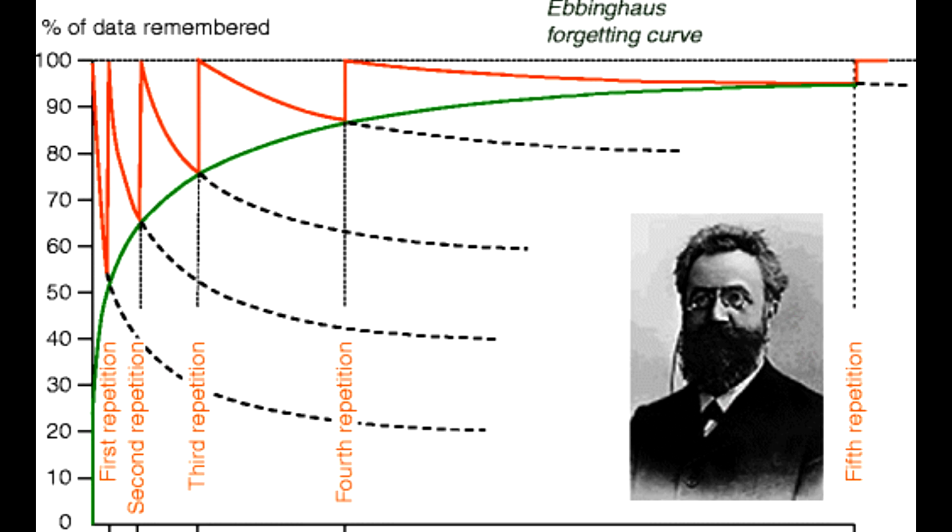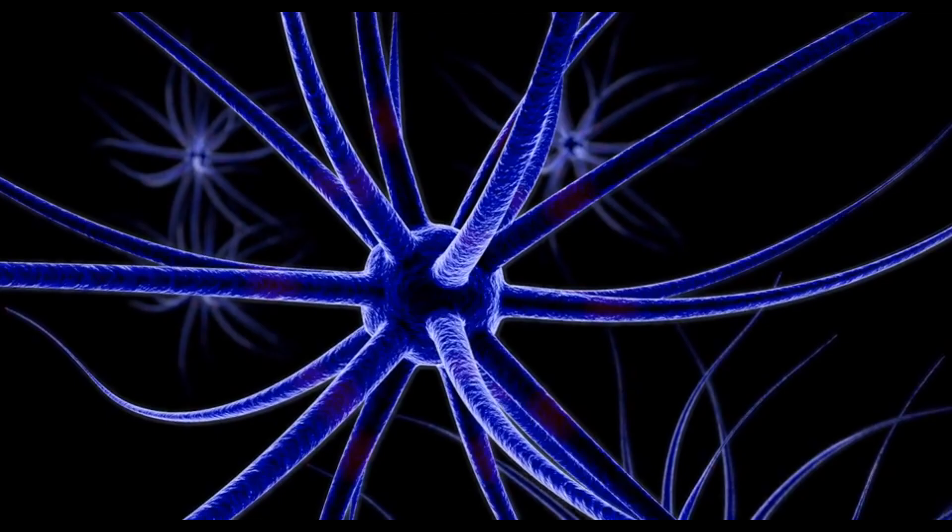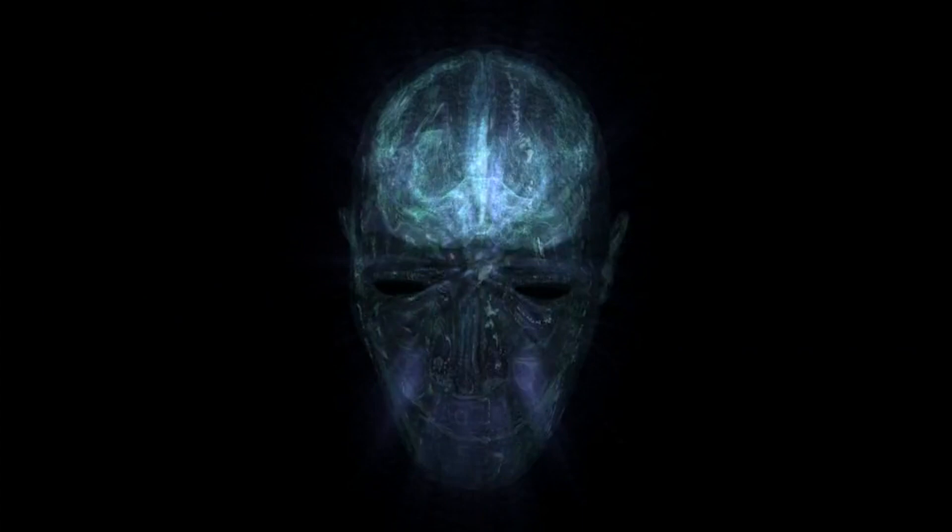Contributions and insights — Ebbinghaus' three laws of memory. The law of practice: the more we rehearse and practice, the better our retention. The law of disuse: memory traces fade over time in the absence of rehearsal. The law of relative value of items: the ease of learning and retaining items depends on their position in a list.